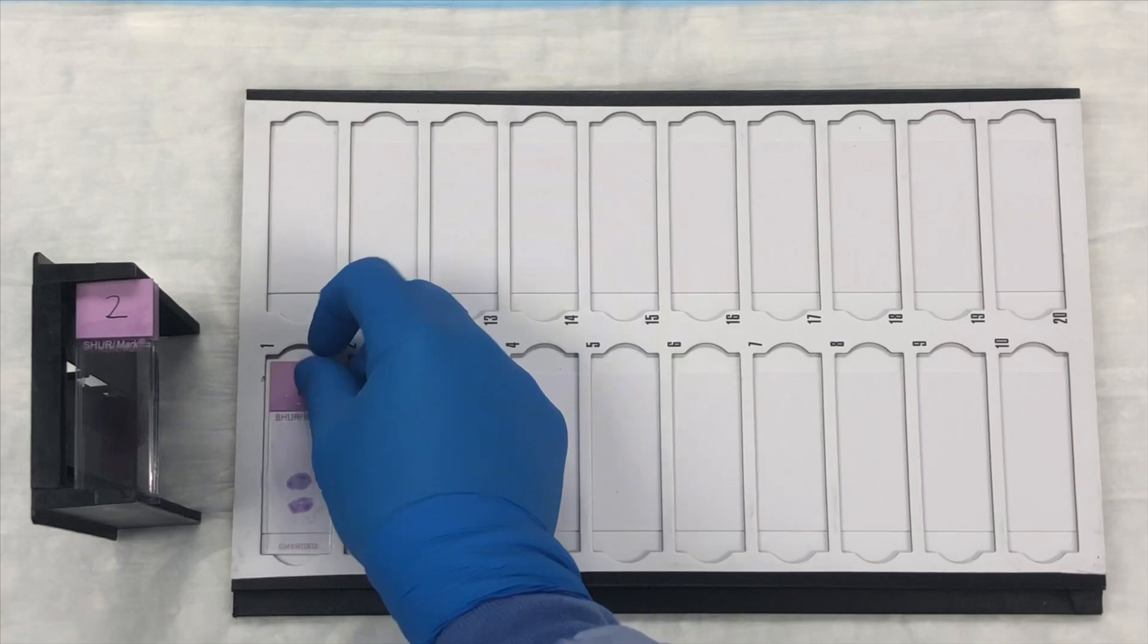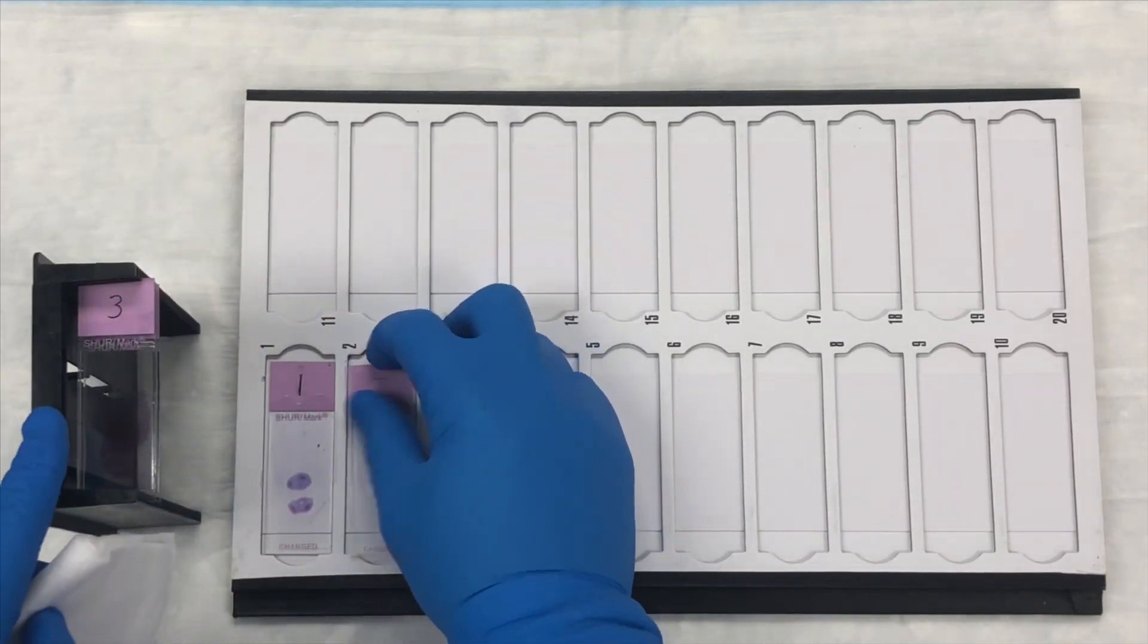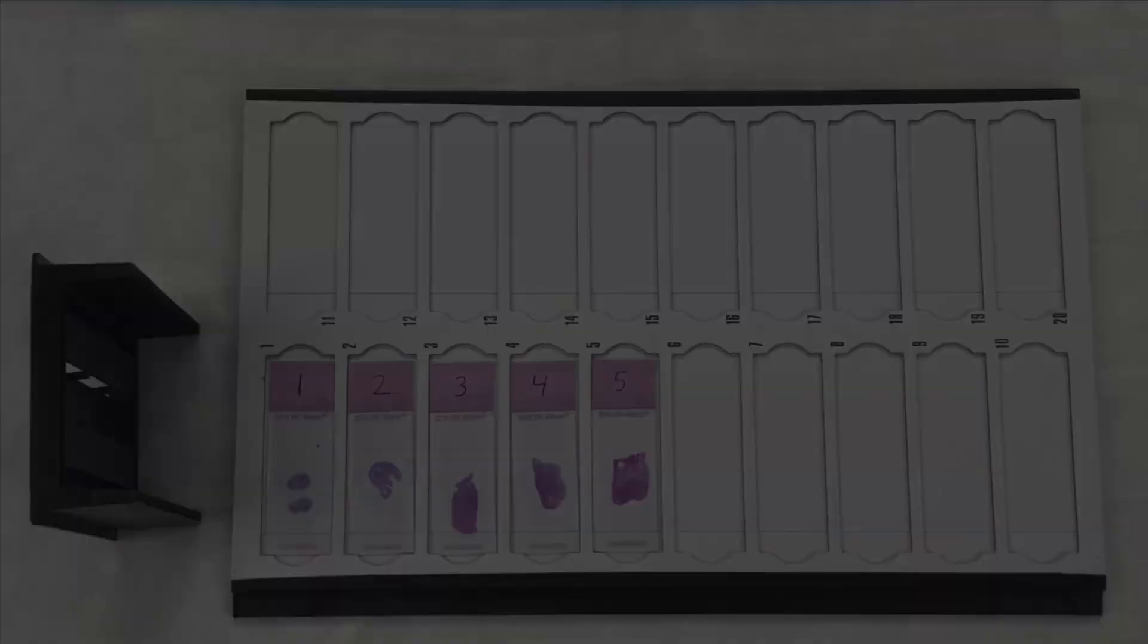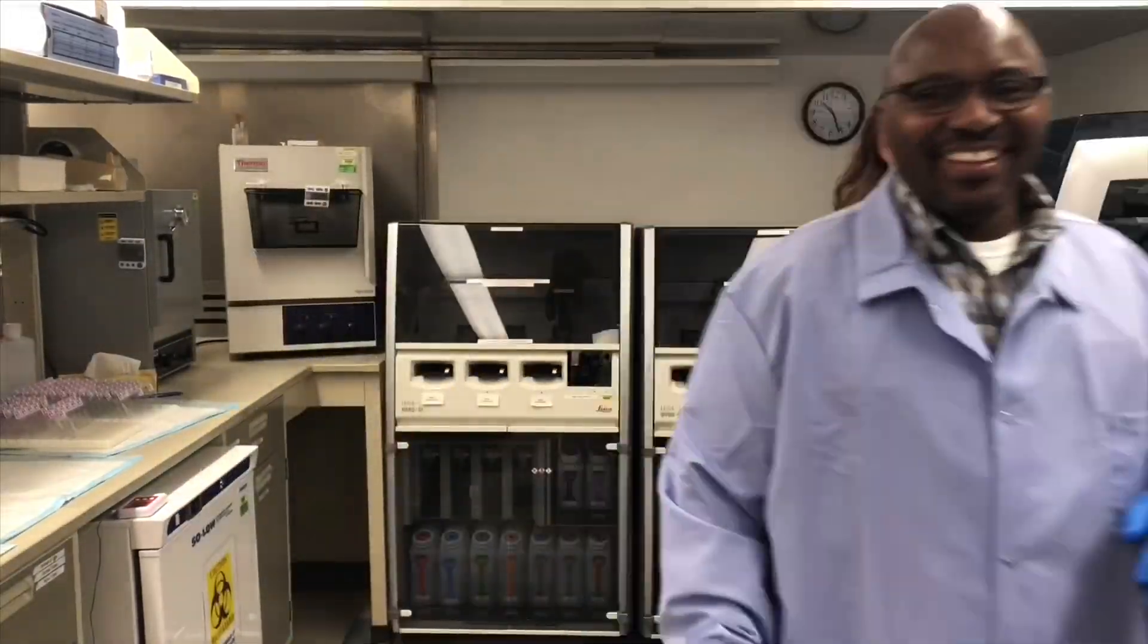Once the slides are dry, they will be cleaned and transported to the pathologist for review. And that's a 90-second explanation of how tissue gets processed in the lab. Thanks for watching from the AP Lab!